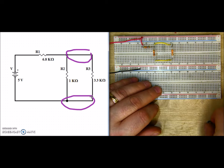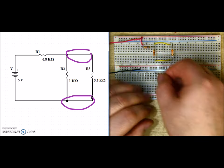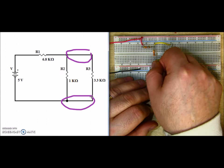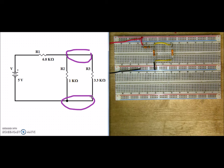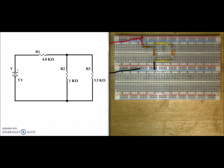And there we have our series parallel circuit. Let's go ahead and verify that we built the circuit. Here we have current coming out of the voltage source and reaching our bottom node.